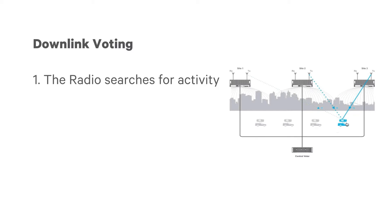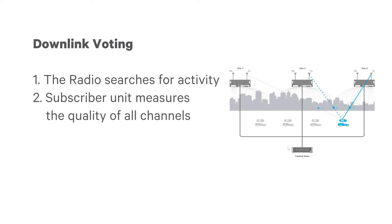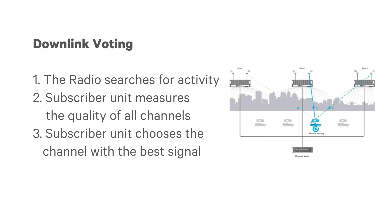Second, the subscriber unit measures the signal quality of all the channels. Third, the subscriber unit goes to the channel with the best signal strength and unmutes the receiver. And in the background, the scanning process continues to take place.